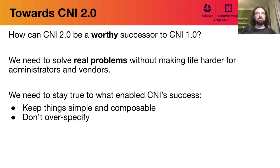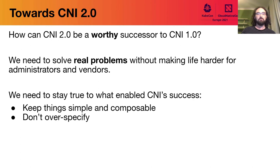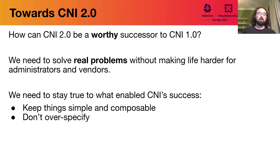So with all that in mind, how can CNI 2.0 be a worthy and successful successor to CNI 1.0? The answer in some sense is very simple: we need to solve real problems for real people without making life appreciably harder for anybody. That means keeping things simple, composable, and understandable — staying true to what's enabled CNI 1.0's success. We also don't want to over-specify every interaction; a really rigid, over-specified protocol leaves no room for unanticipated uses and makes the protocol difficult for anyone to use even in slightly divergent ways.